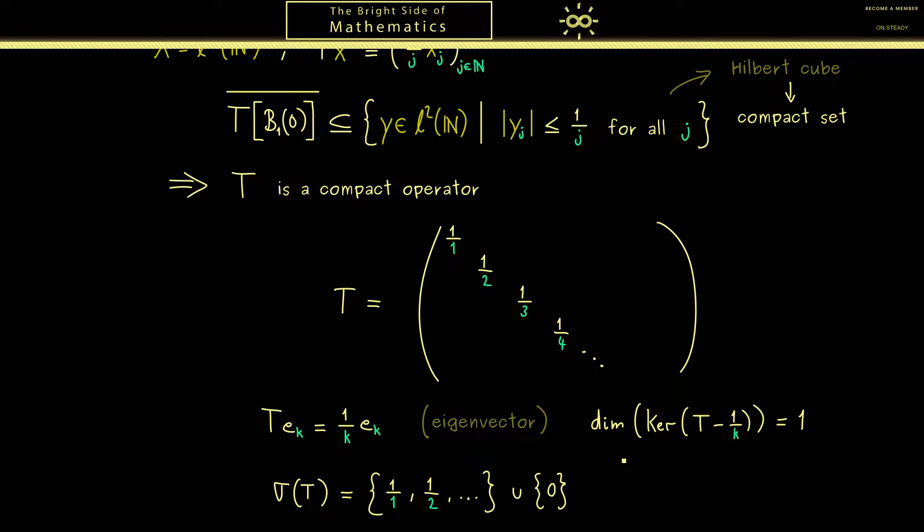However, of course you see, this was an easy example, because the operator T was given in this diagonal structure. This is something that is also easy to deal with when you have matrices. Therefore, you might recall from linear algebra that diagonalization is an important tool to deal with other matrices.